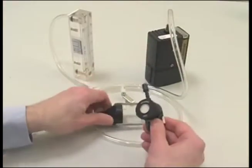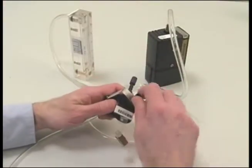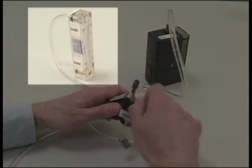Then, insert the fresh IOM you will use for worker sampling. Be sure to remove the rotometer and attach tubing before sampling.